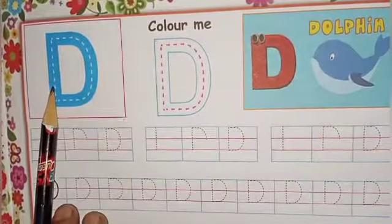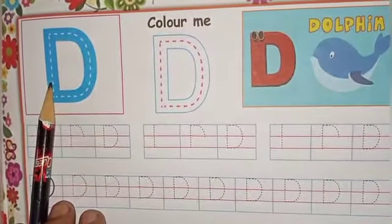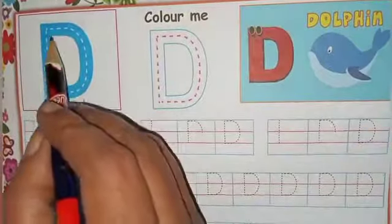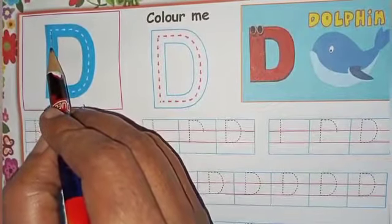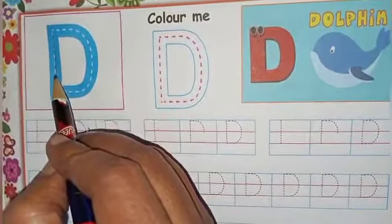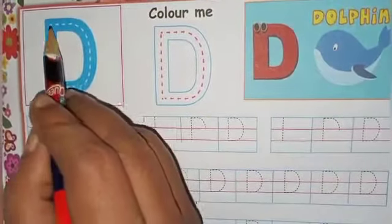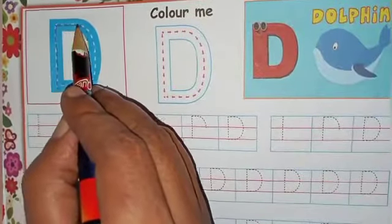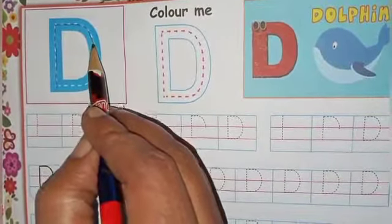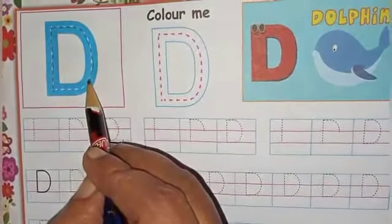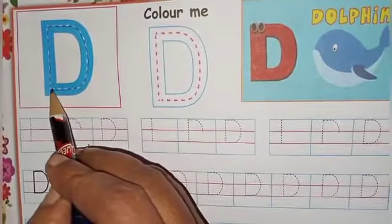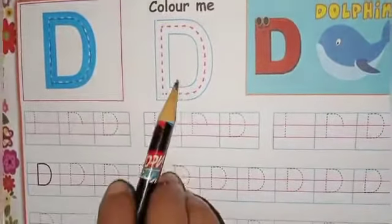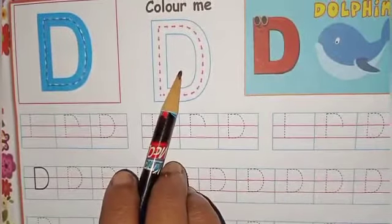This is capital letter D. First draw a standing line, then a curve, then we get capital letter D. You have to color here.